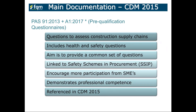PAS 91 is about pre-qualification requirements — it contains questions to assess construction supply chains, including health and safety questions. The aim is to provide a common set of questions to all who are filling it in, and it's linked to the Safe Scheme and Procurement — SSIP. It tries to drive encouragement and participation from more SME and smaller construction companies so they can provide the same type of information to the required principal contractor, demonstrating a level of professional competence. In all cases, it references back to CDM 2015.